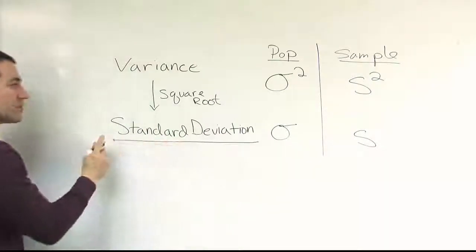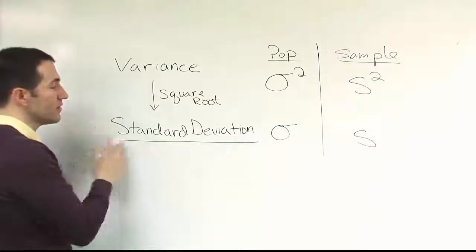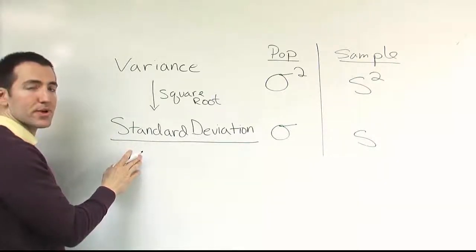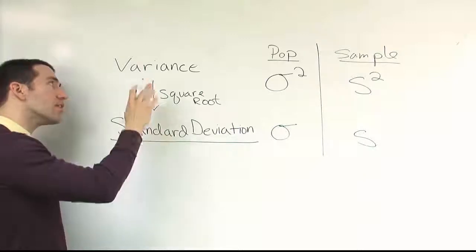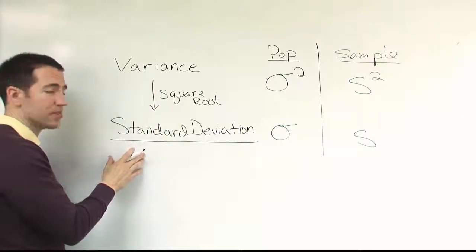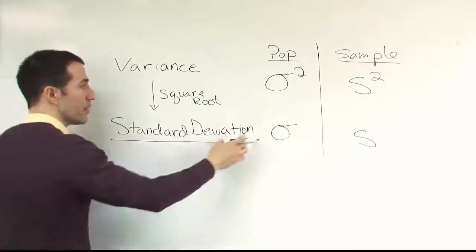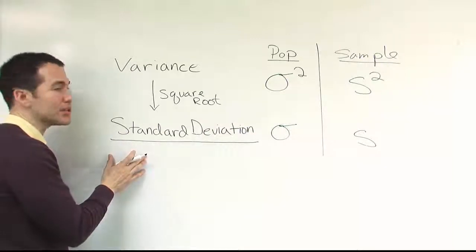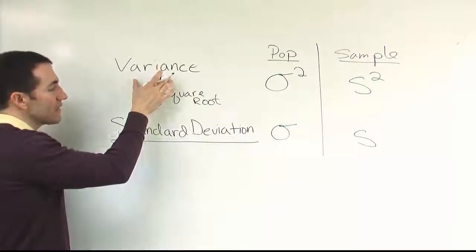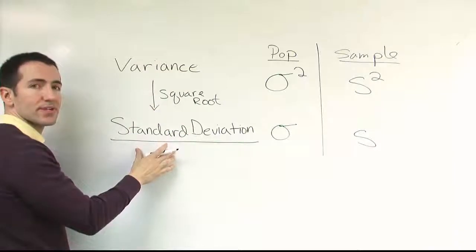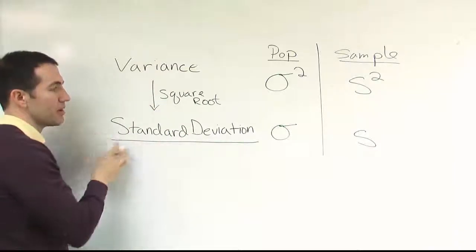We're ultimately going to want to use the standard deviation primarily to measure variance. This is going to be our first choice, our preferred choice. The range is sometimes used in some settings, but really for the majority of problems we encounter in statistics, we'll be dealing with the standard deviation. The variance is something we calculate along the way to the standard deviation, and primarily we'll talk about this quantity.